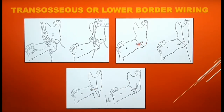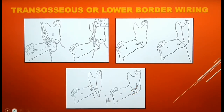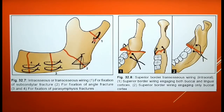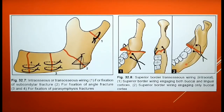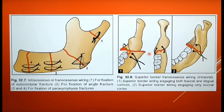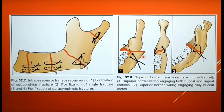In such cases, a figure-of-8 wiring along with the conventional wiring is performed. This fixation is reinforced by a figure-of-8 wiring as you can see in the diagram. There are two kinds of wiring techniques performed on the body and symphysis regions. For superior border wiring, only drilling through the buccal cortical plate is sufficient — the holes are drilled only on the buccal cortex. Whereas in the other technique, both the buccal and the lingual cortical plates are drilled for the wiring.